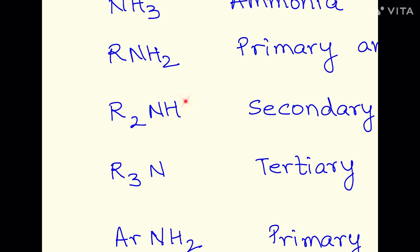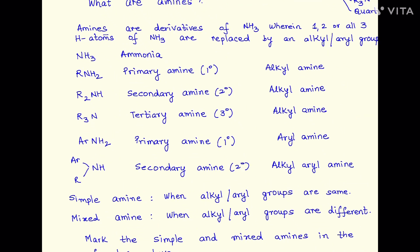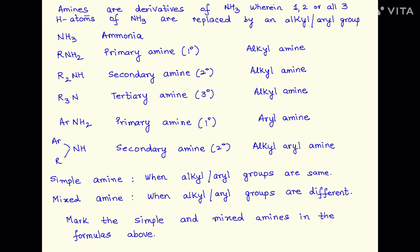If you see the functional group is NH, that means it's a secondary amine. If you see that there is only one nitrogen with three alkyl groups or aryl groups attached to it, then it is a tertiary amine. So we have three categories over here.